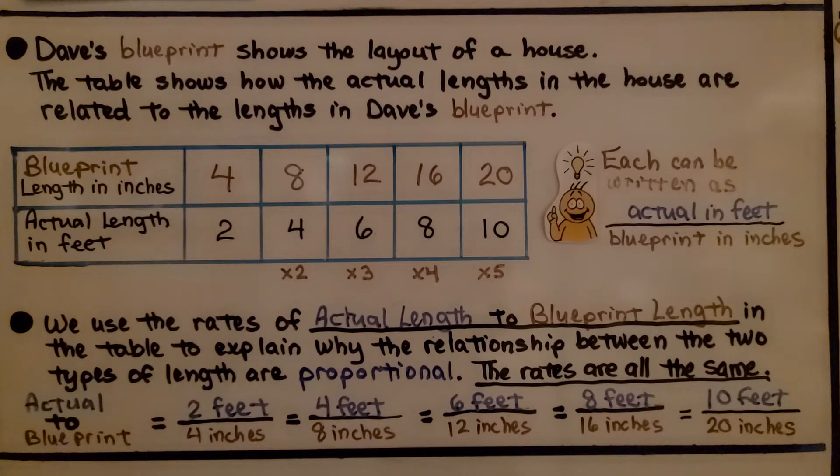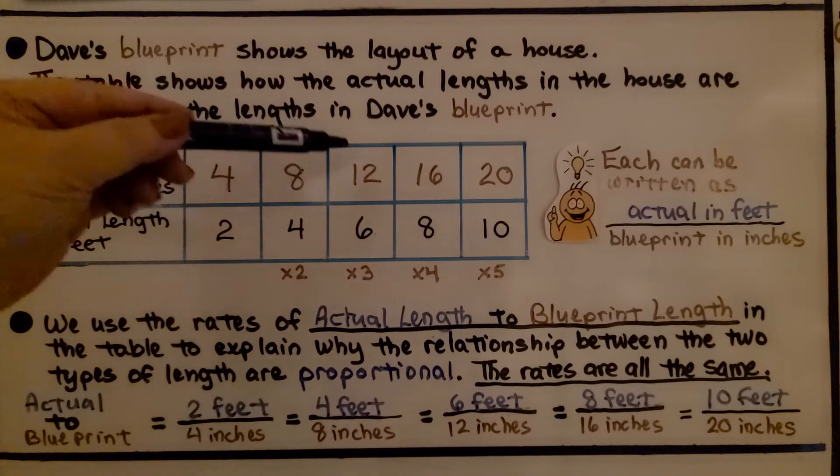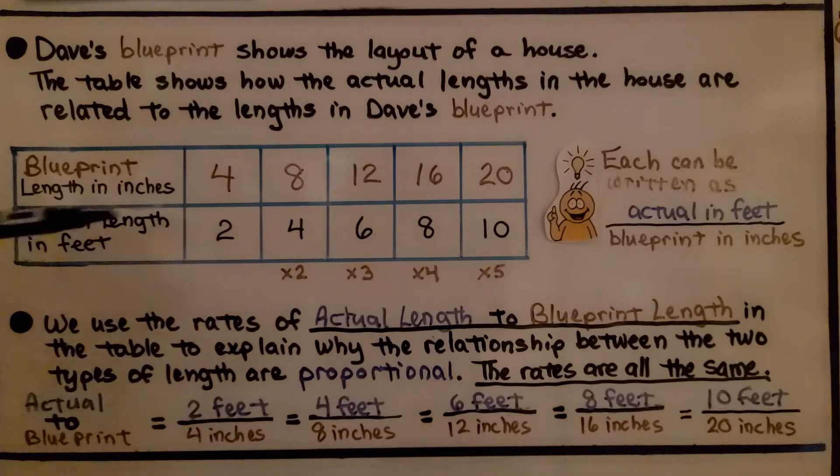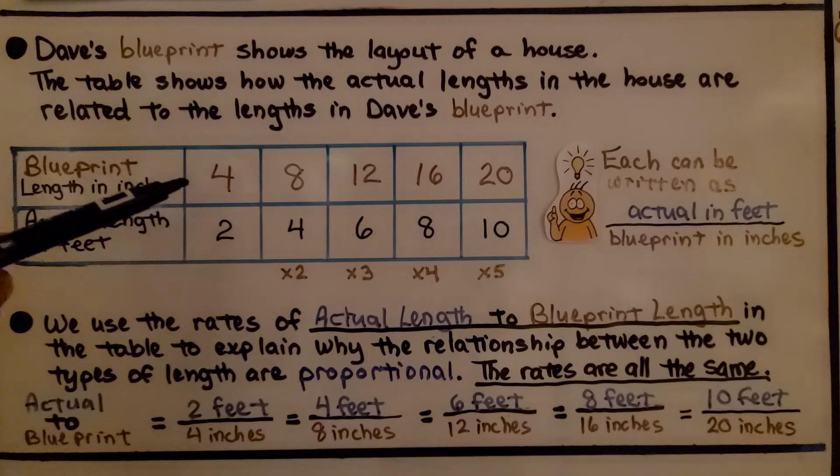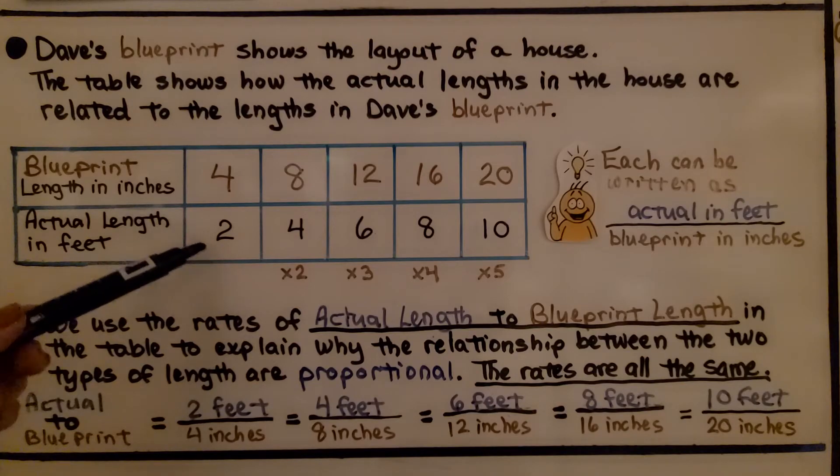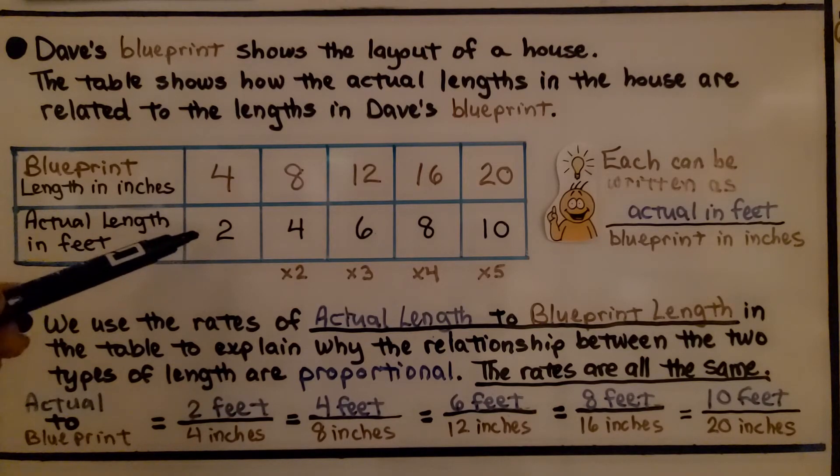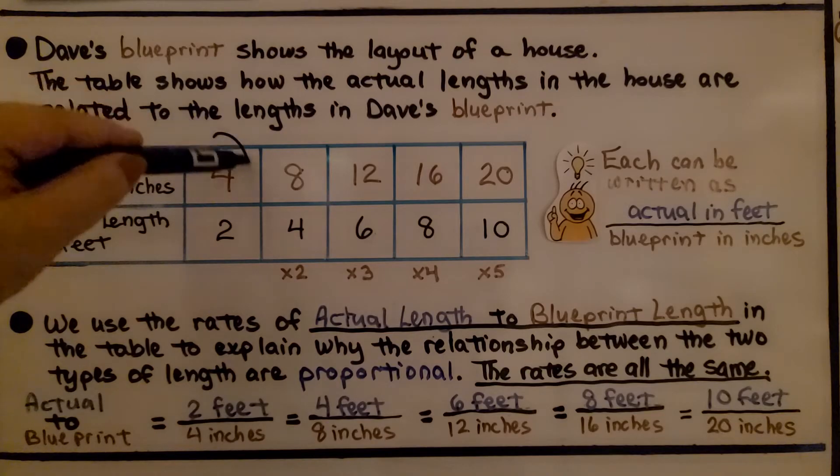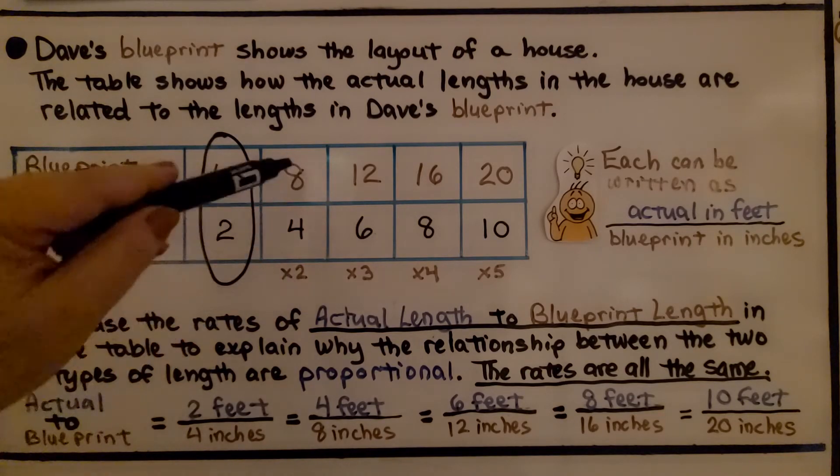Dave's blueprint shows the layout of a house. The table shows how the actual length in the house are related to the lengths in Dave's blueprint. So here are the blueprint lengths in inches. You can see we have 4, 8, 12, 16, 20. And it's in relation to the actual length in feet of the house after it's built. So 4 inches on the blueprint would be 2 feet in the actual length of the house once it's built. And if we take these numbers and multiply them by 2, we get these numbers.